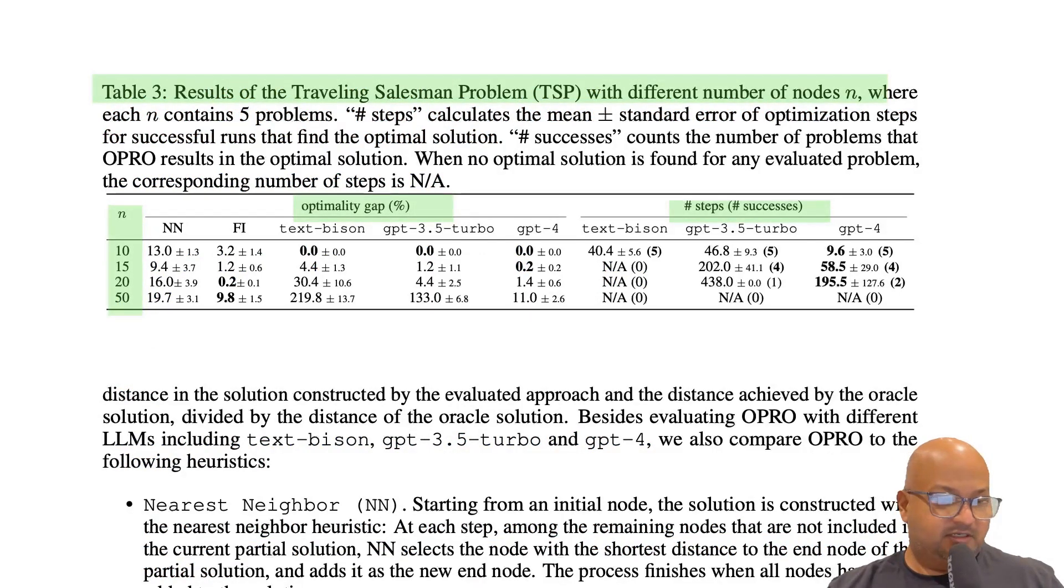Now, traveling salesman is a much harder problem than linear regression. But even here, you can see that with 10 or 15 points on the plane, GPT-4 can find the optimum solution or something within 1% of the optimum solution, even for up to 20 points. By the time you get to 50 points, it becomes intractable and the model gives up.